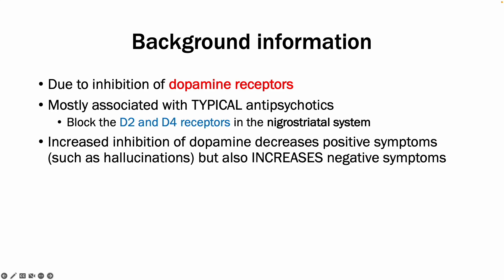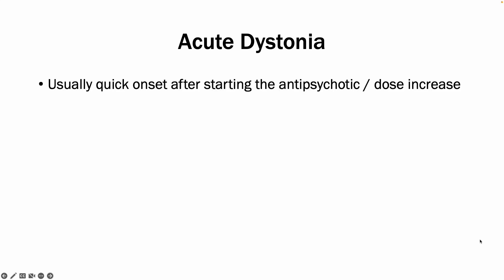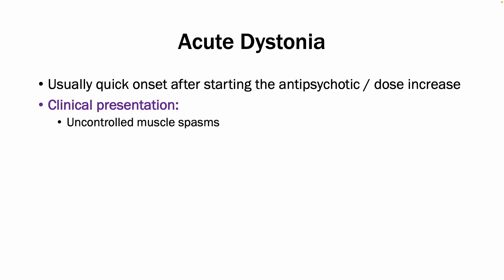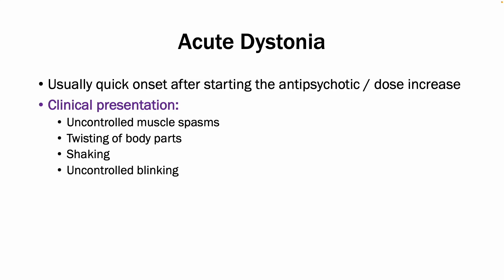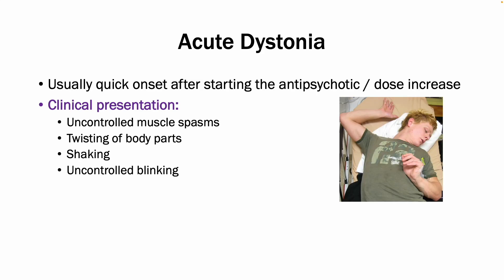Acute dystonia occurs roughly one to five days after drug initiation or a dose increase. It is the involuntary muscle spasm or muscle contraction and is more common in young people on antipsychotics. In terms of clinical presentation, you get uncontrolled muscle spasms, twisting of the body, shaking, and sometimes uncontrolled blinking.